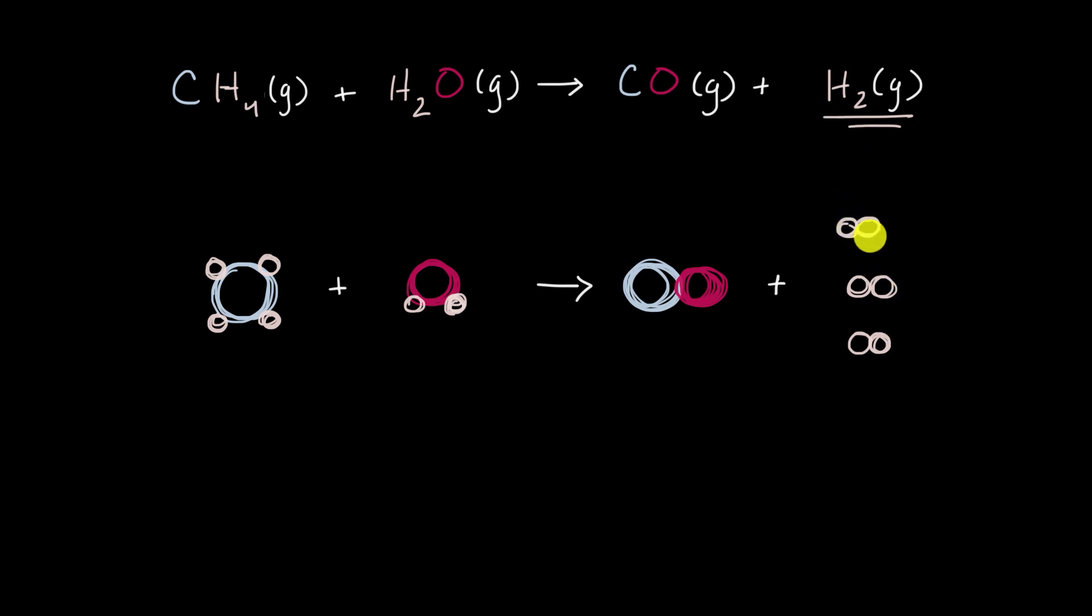So instead of just having one molecule of molecular hydrogen that has two hydrogen atoms in it, we now have three. So to balance this chemical equation, all we have to do is say, okay, we don't just have one molecule of hydrogen here. We have three molecules of hydrogen.